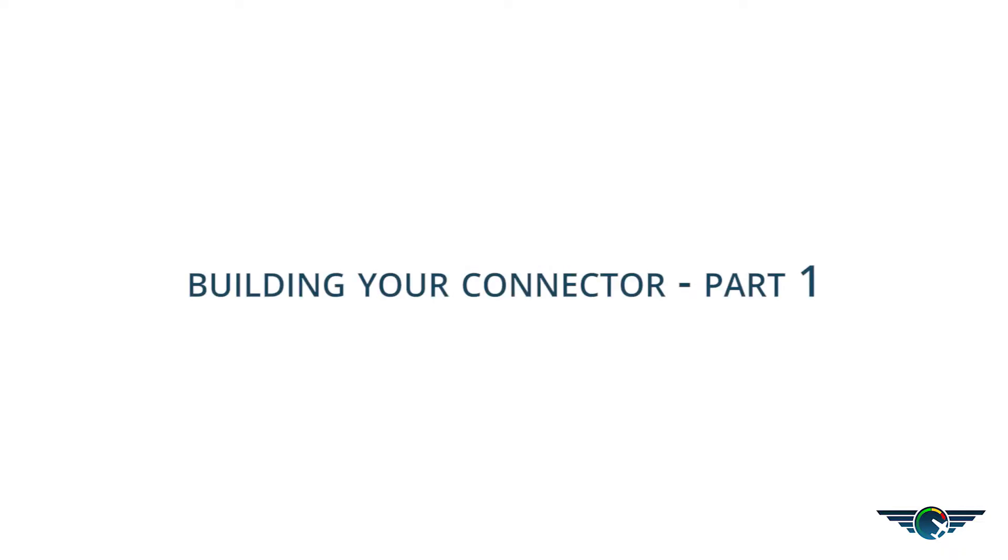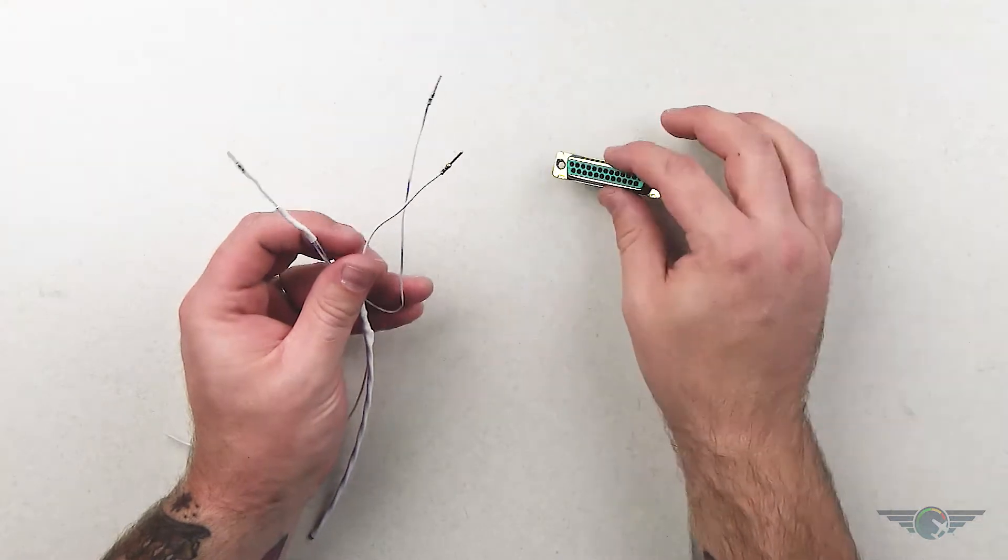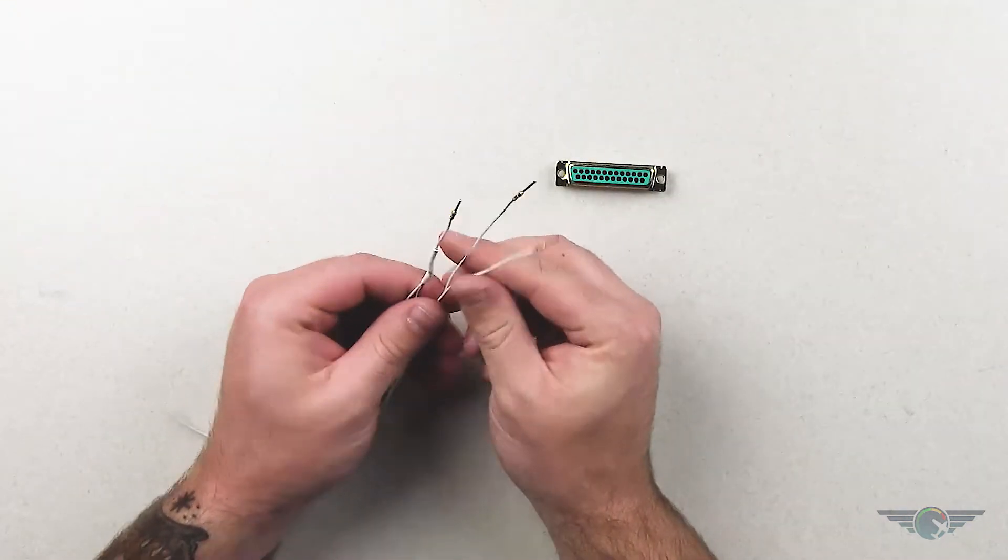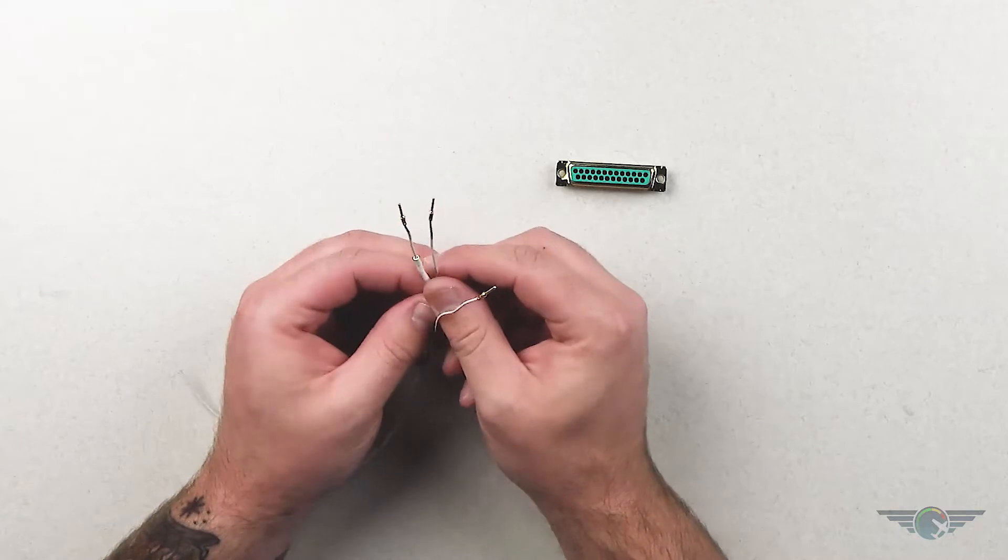Okay so now we have our pins crimped and we're going to start building our connector out. You have to go by the pin out in the installation manual.